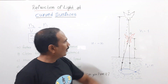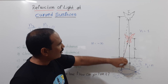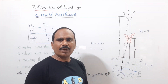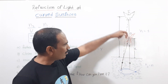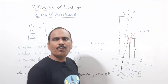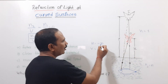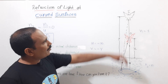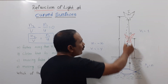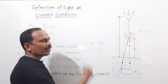The image distance is also measured opposite to the incident ray direction, so image distance v = −y. We substitute these values: n2 = n, v = −y, n1 = 1, and u = −x into the plane surface formula.